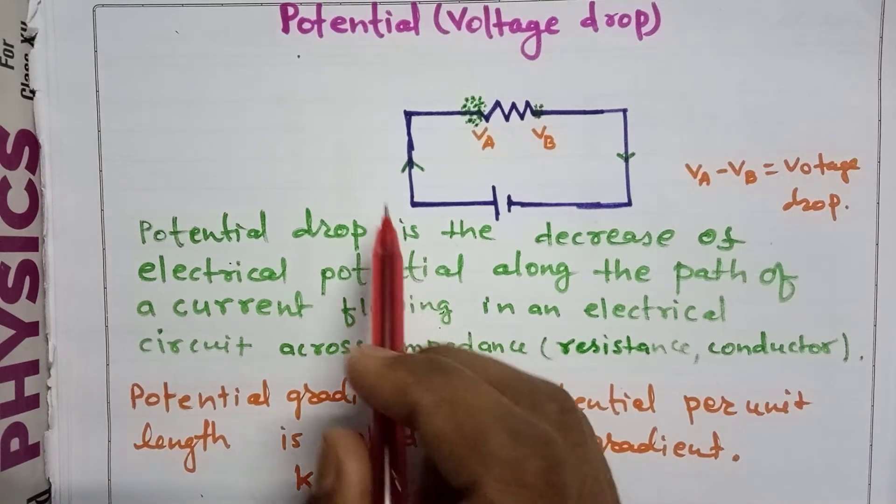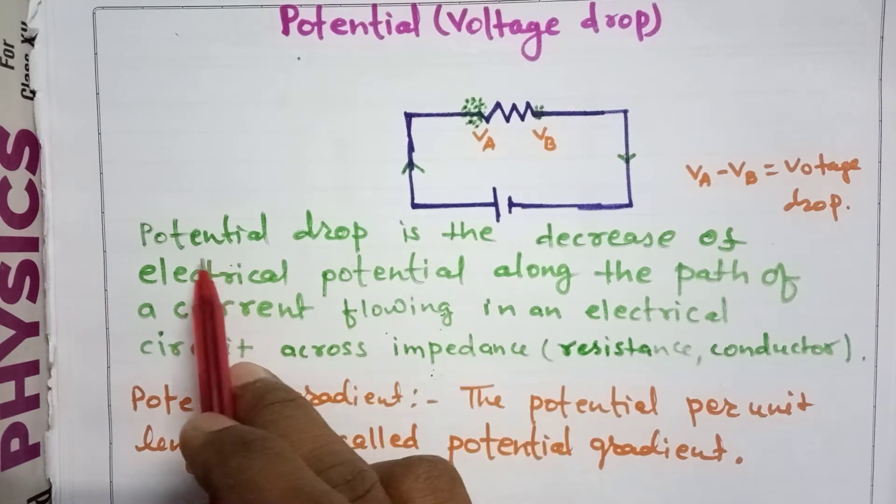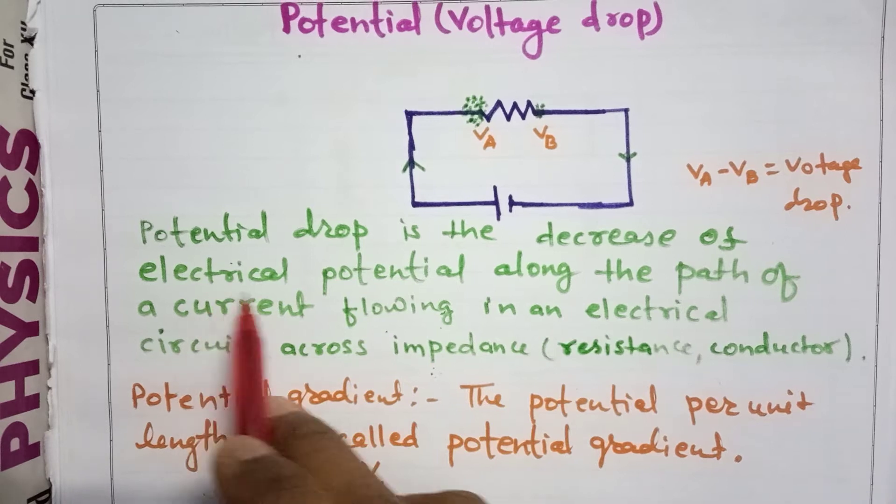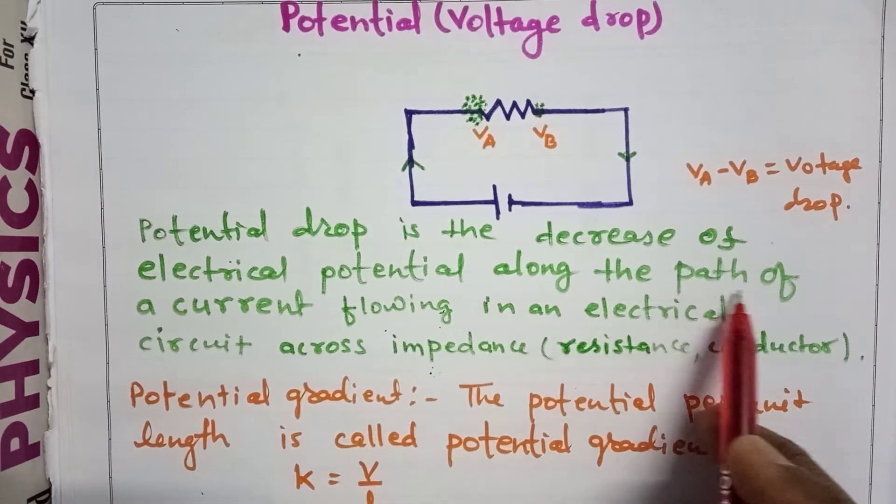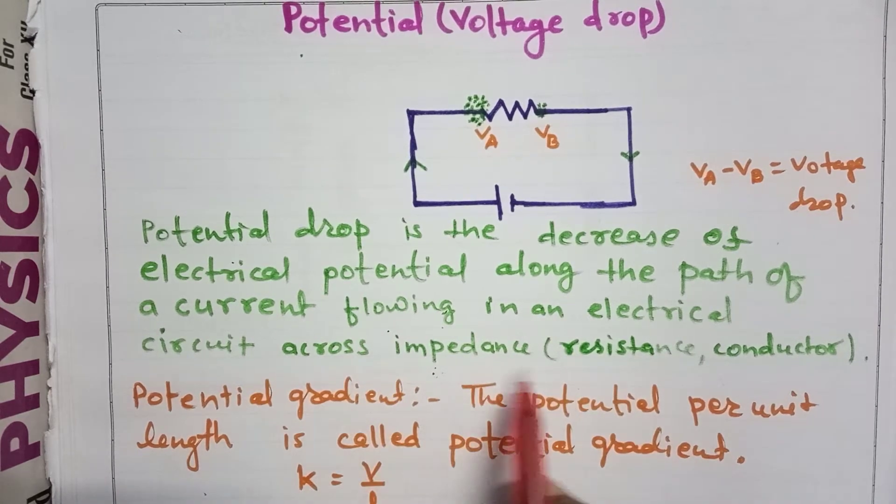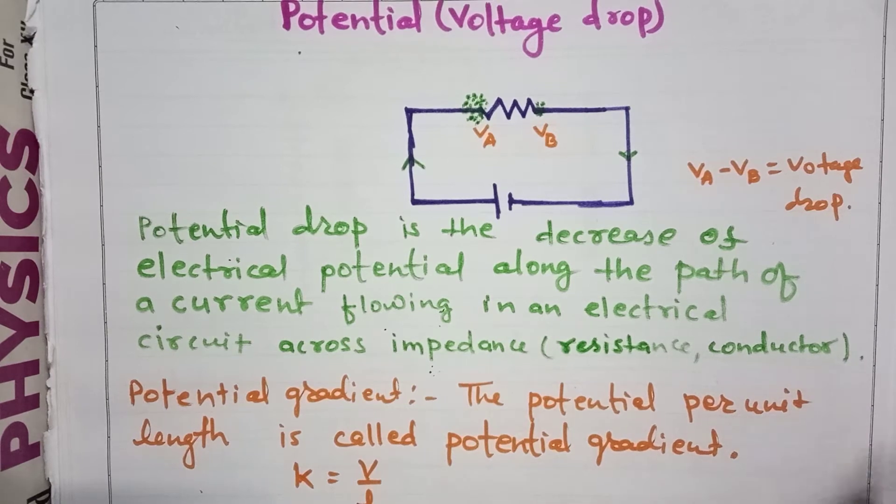Hello students, let us discuss the topic of potential or voltage drop. Potential drop is the decrease of electrical potential along the path of a current flowing in an electrical circuit across impedance, resistance, or conductor, or any other devices.